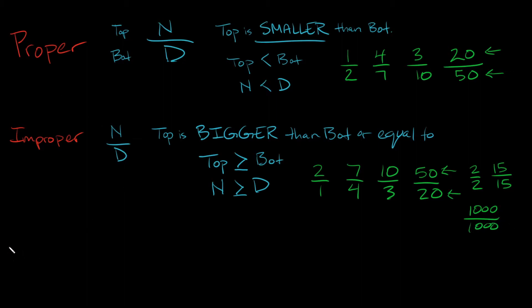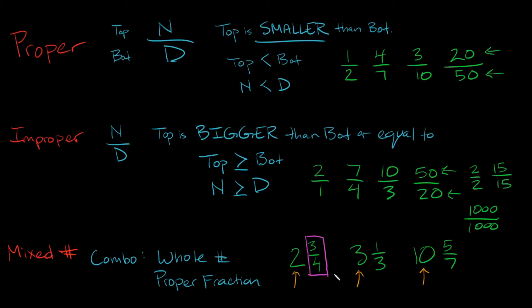And the other type of fraction is called a mixed number. So what's a mixed number? A mixed number is going to be a combo of two things. So we have a whole number and we also have a proper fraction. So for example, 2 and 3 fourths, 3 and a third, 10 and 5 sevenths. So we have a whole number here, we have a whole number here, we have a whole number here. 2, 3, and 10, those are our whole numbers. And you can see we also have proper fractions. 3 over 4 is our proper fraction, 1 over 3, 5 over 7, those are all proper fractions.